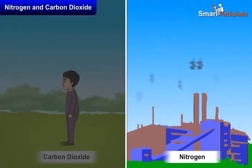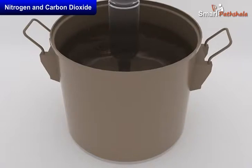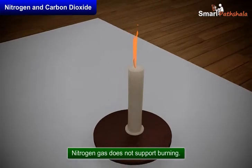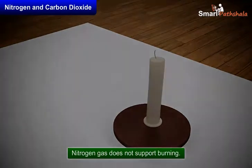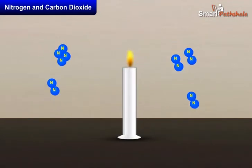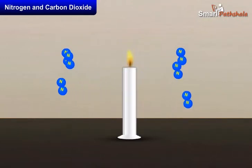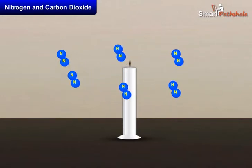Nitrogen is the most abundant gas in the atmosphere. In the previous activity, we observed that a major part of air is still present in the glass bottle even after the candle blew out. This indicates the presence of some component in the air which does not support burning. A major part of air is nitrogen, as it constitutes 78% of the atmosphere. Hence, we can conclude that nitrogen gas does not support burning.